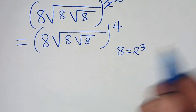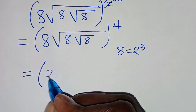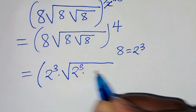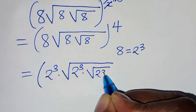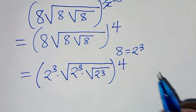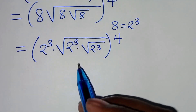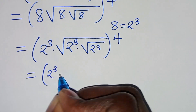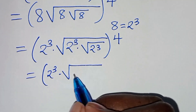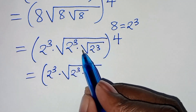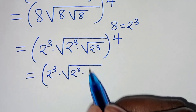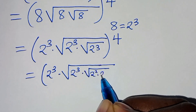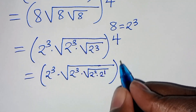Let's substitute 8 as 2 to power 3. So this is the same thing as 2 to power 3 times square root of 2 to power 3 times square root of 2 to power 3, raised to power 4. Now this is 2 to power 3 times the square root of 2 to power 3. We can express the square root of 2 to power 3 as the square root of 2 to power 2 times 2 to power 1, with the bracket raised to power 4.